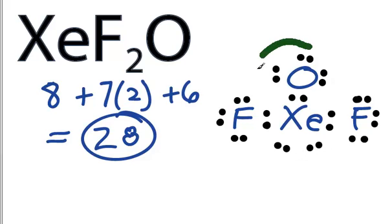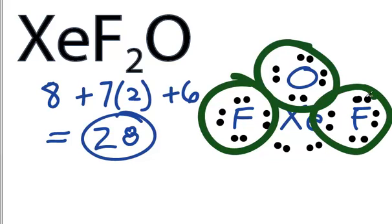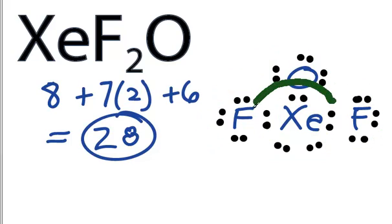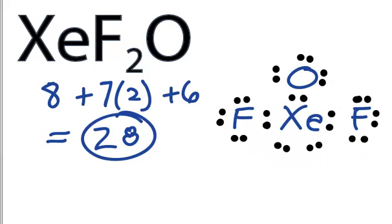Let's put them here because Xenon can have more than eight valence electrons. The Oxygen has eight, Fluorine has eight, this Fluorine has eight, and Xenon can have more than eight. You might think you're done, but you don't really know until you look at the formal charges. That's especially the case with Xenon that can hold more than eight valence electrons. Let's look at those formal charges for XeF₂O.